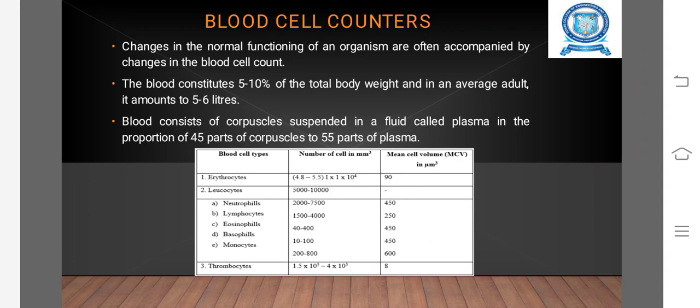Blood cell counters: Changes in the normal functioning of an organism are often accompanied by changes in the blood cell count. The blood constitutes 5-10% of the total body weight, and in an average adult it amounts to 5-6 liters. Blood consists of corpuscles suspended in a fluid called plasma in the proportion of 45 parts of corpuscles to 55 parts of plasma.